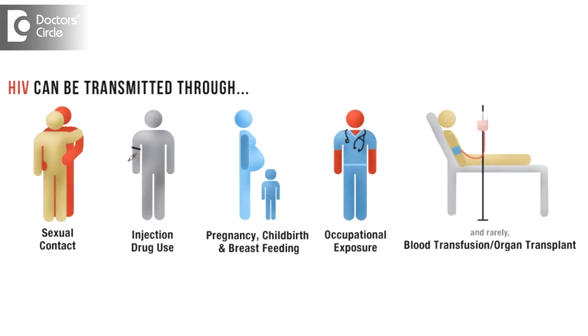Basically, AIDS virus or HIV virus transmission happens through open cuts, wounds, sores, or directly penetration into the blood or through any mucus membrane which is there in the anal canal, anus, or in the vagina. So these are the methods of transmission of the HIV virus.